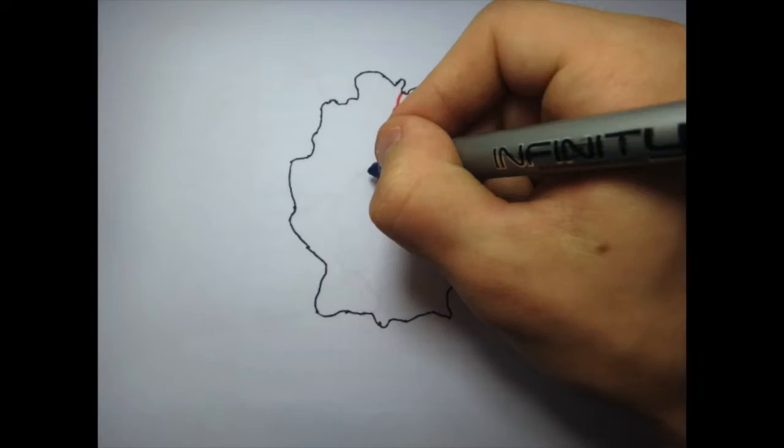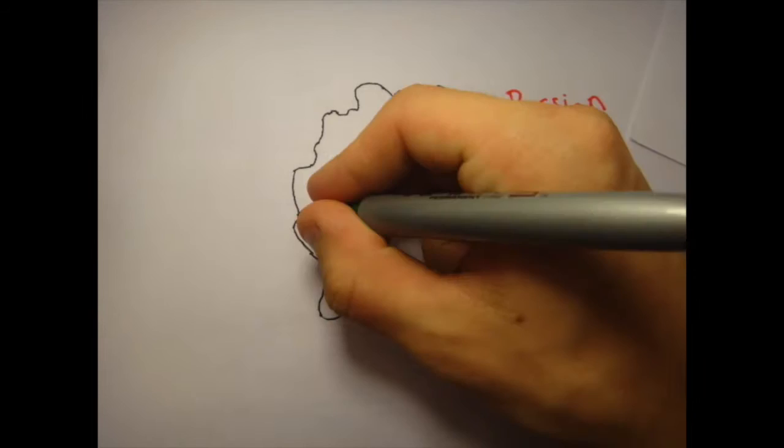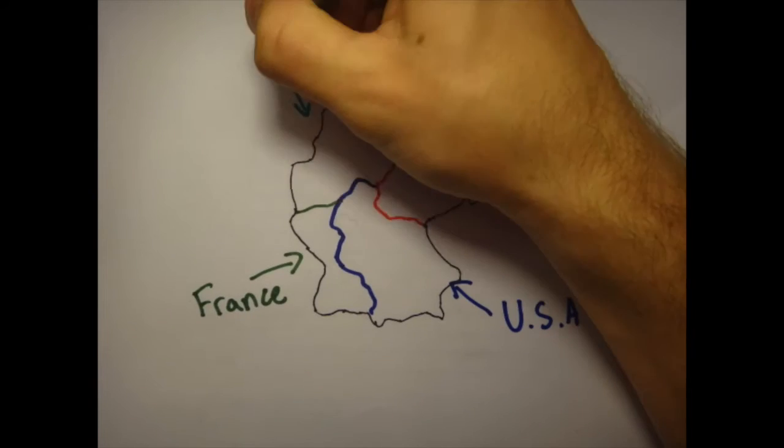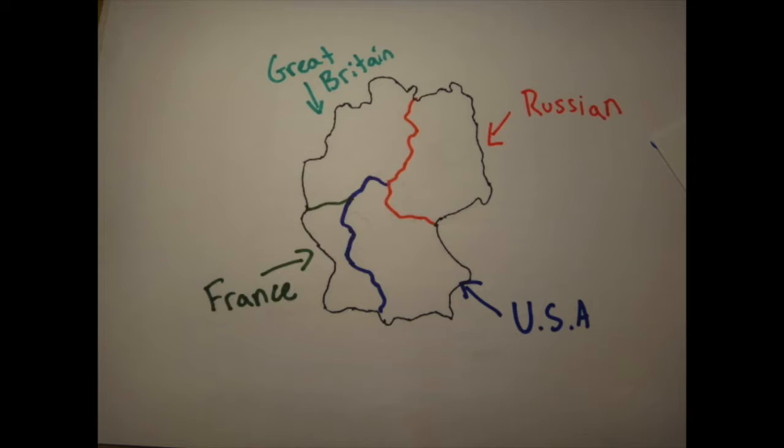The Berlin Blockade was an attempt in 1948 by the Soviet Union to limit the ability of France, Great Britain, and the United States to travel to their sectors of Berlin, which lay within Russian-occupied East Germany.